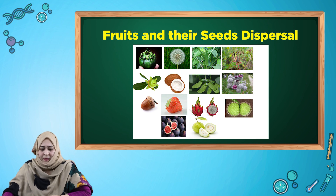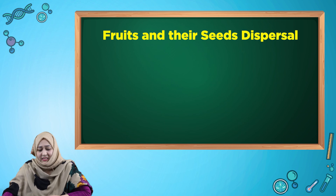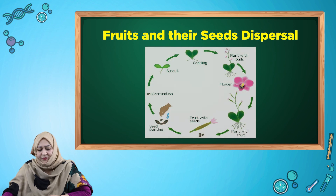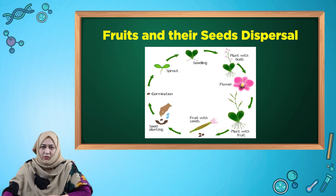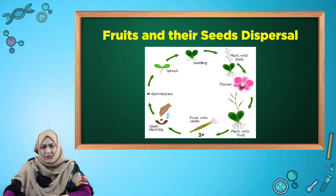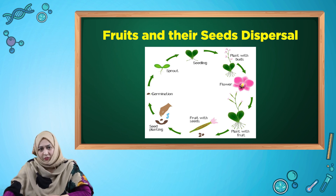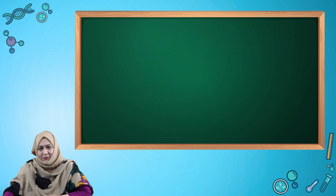Explosion: some fruits eject their seeds as the seeds fall away from the parent plant — that is seen in geranium and okra. So this is all about the life cycle of a flowering plant. Hope you liked the video!